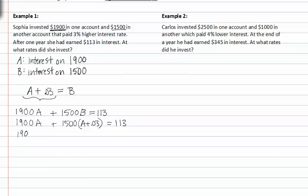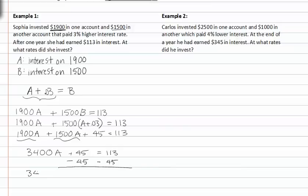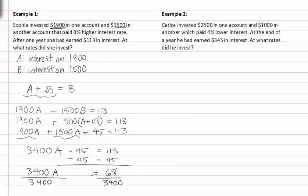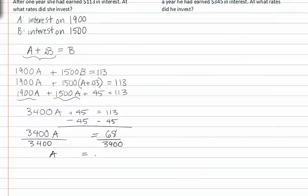Distributing through, we get 1500 A plus 45 is equal to 113. Now, adding like terms, we get 3400 A plus 45 is equal to 113. Subtracting 45 from both sides gives us 3400 A equals 68. Dividing by 3400 on both sides gives us A is equal to 0.02 or 2 percent.